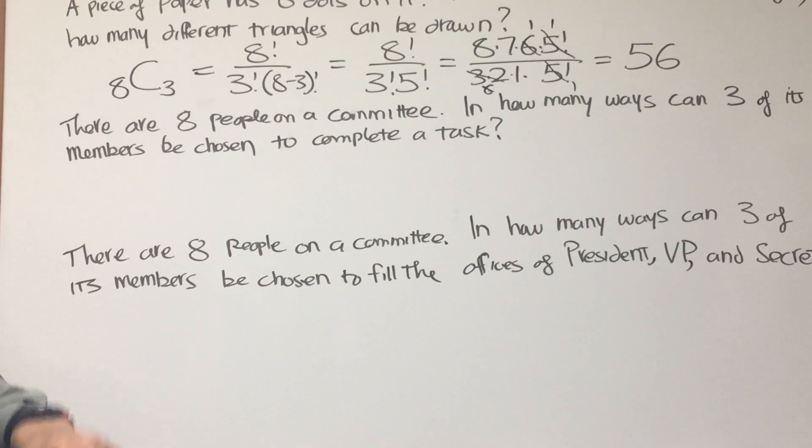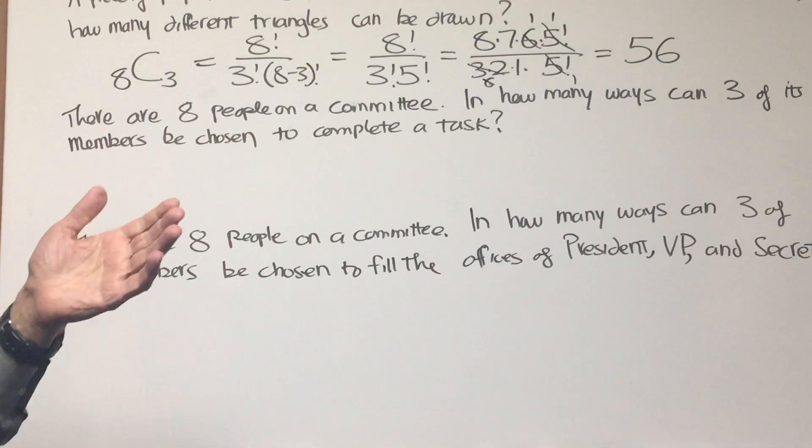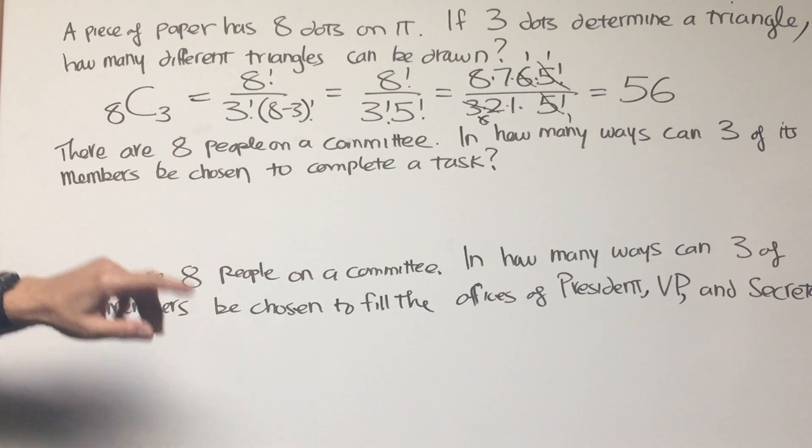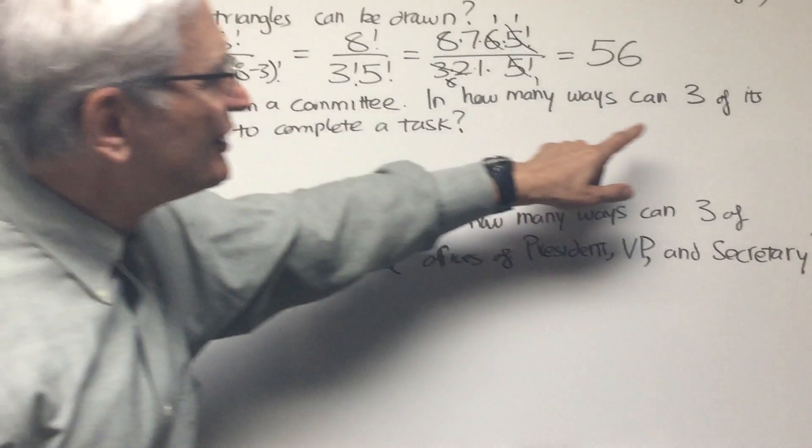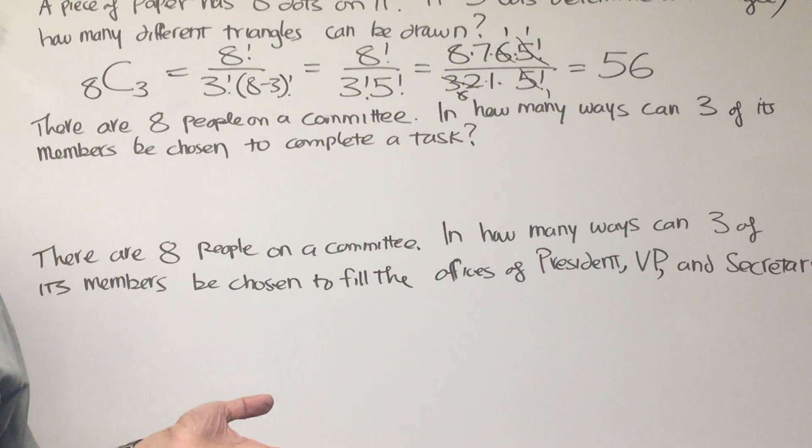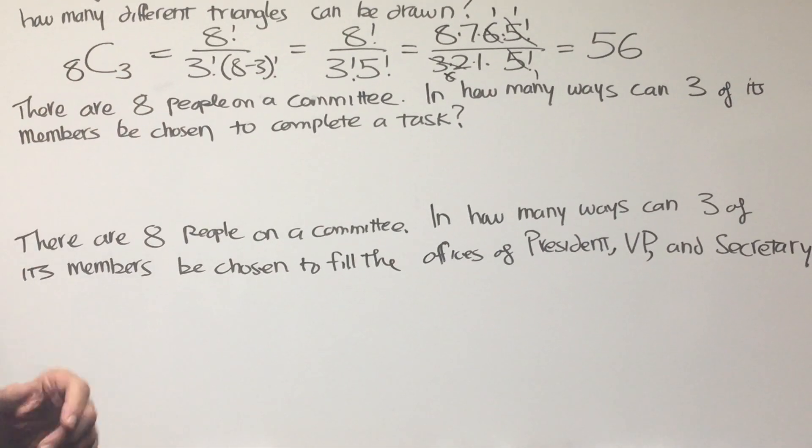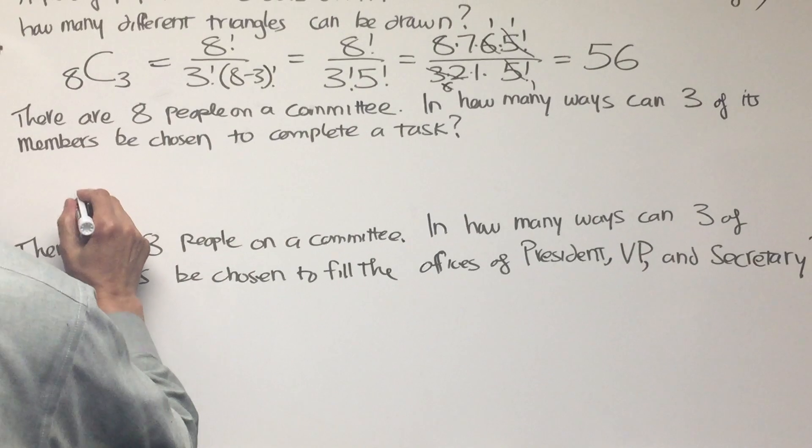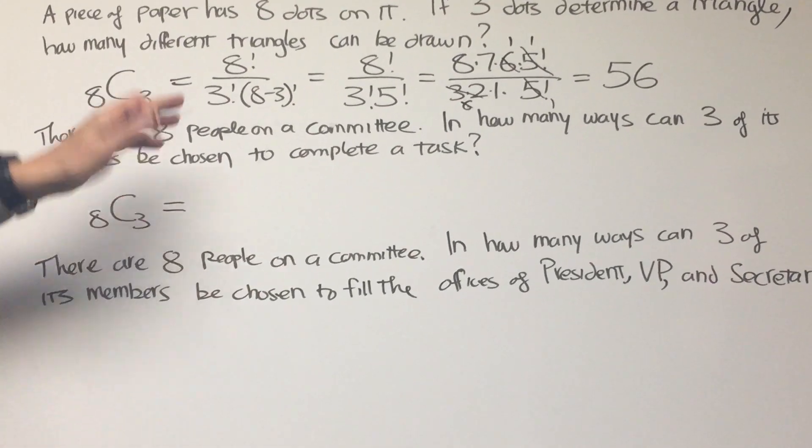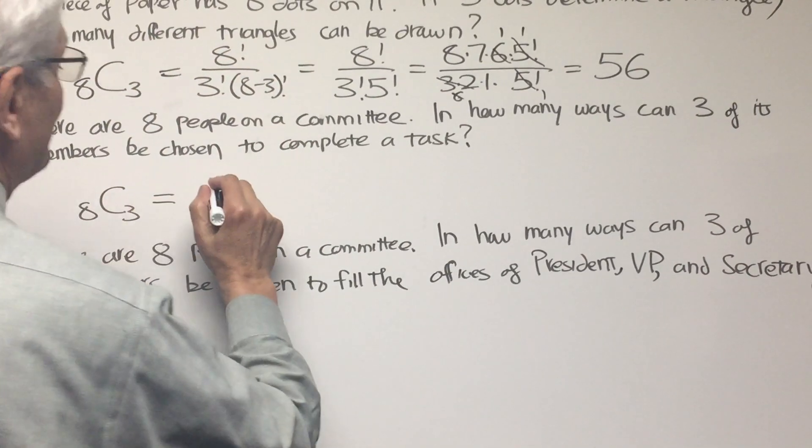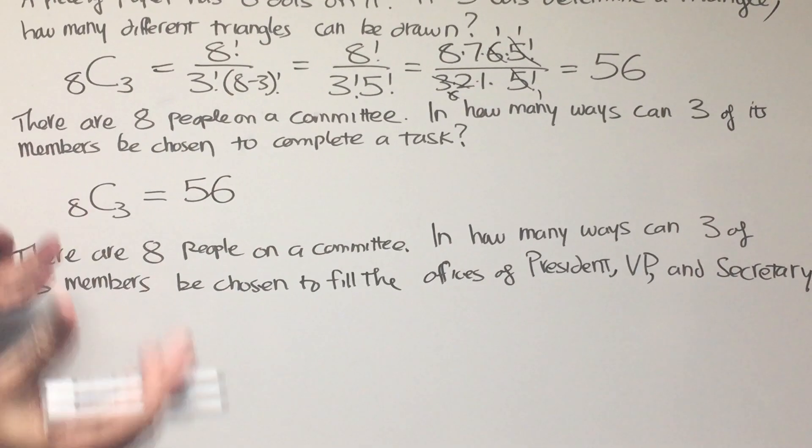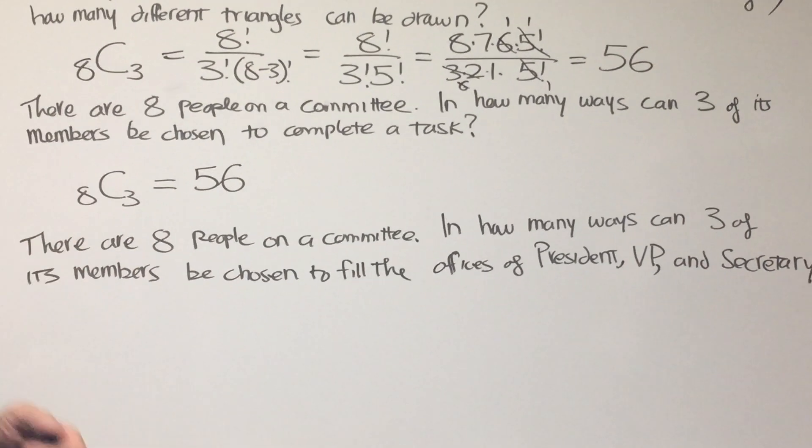Okay, here we have a related problem. And it's really the same problem. And you should be able to recognize the same type of problem in different contexts. There are eight people on a committee. In how many ways can three of its members be chosen to complete a task? Well, what is that? It's like choosing three things out of eight things when order doesn't count. So the answer to this is eight choose three. It's exactly the same as we calculated in the previous problem. So we know there's 56. Fifty-six ways that three members can be chosen for a task, sort of a subcommittee.